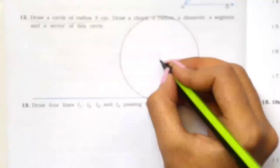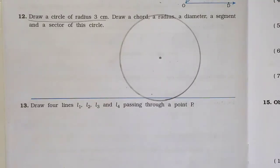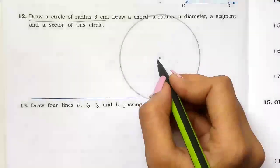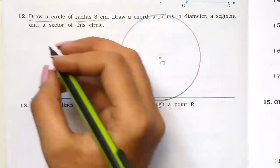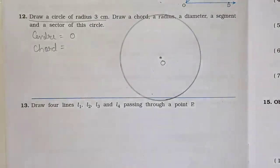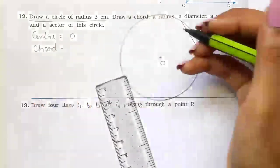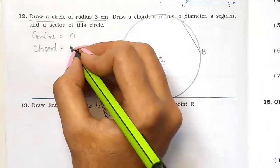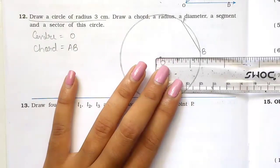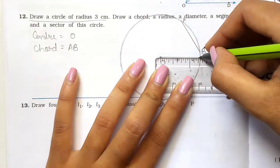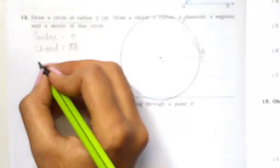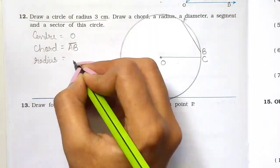Now draw a chord, a radius, a diameter, a segment and a sector of the circle. First mark center O. For the chord, draw chord AB anywhere on the circle. For the radius, draw from O to a point C on the circle — OC is the radius. For the diameter, draw a straight line through the center — DE is the diameter. For the segment, the chord AB with its arc forms the shaded portion — that is the segment. For the sector, two radii with an arc form a sector — mark it OEF with the shaded portion as the sector.